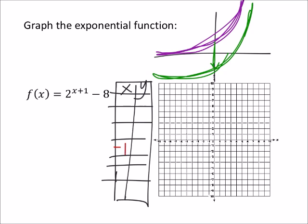So that would give us 2 to the power of negative 1 plus 1 is 0, minus 8. That's really just 1 minus 8, so that's negative 7. So this shows, right here, just this point, negative 1, negative 7.